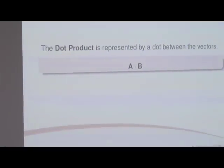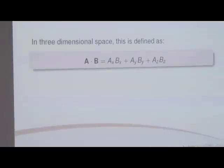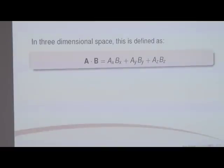The dot product is represented as a dot between two vectors — you've got vectors A and B, put a dot between them and that gives you the dot product. There are essentially two methods: an analytical method using maths, or a geometric method where you draw the vectors. The analytical method in three-dimensional space: A dot B is defined as Ax times Bx, plus Ay times By, plus Az times Bz. You take the x values of A and B and multiply them, then y values, then z values, and add them all together.